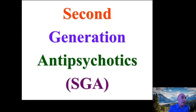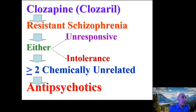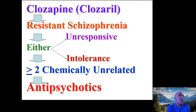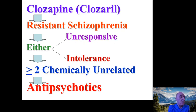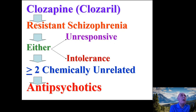Regarding second-generation antipsychotics, clozapine (trade name Clozaril) is an atypical antipsychotic used to treat resistant cases of schizophrenia — patients who did not respond to or could not tolerate at least two chemically unrelated antipsychotics. So clozapine is not a first-line option; it is used only when the patient failed at least two prior antipsychotics.